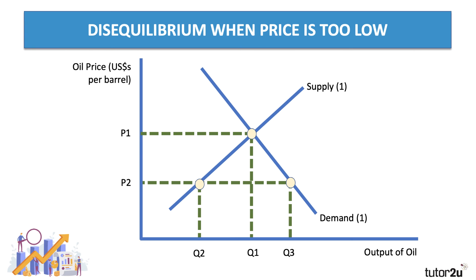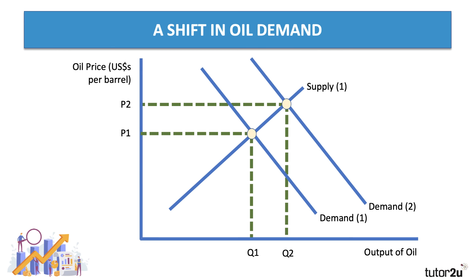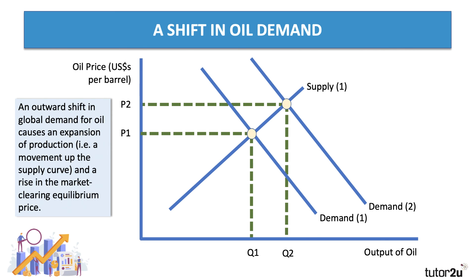P1 is the equilibrium price in the market. So what happens if there's a shift in oil demand? One of the factors we talked about in that exercise was a vaccine causing increased demand for air travel. That would shift the demand for oil out to the right from D1 to D2. You would then see an expansion of oil production from Q1 to Q2 — the quantity traded goes up, the quantity supplied expands — but the market price goes up to P2. An outward shift in demand causes an expansion of production, a movement up the supply curve, and also an increase in the market clearing price.